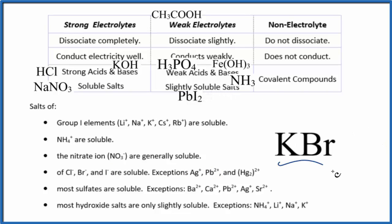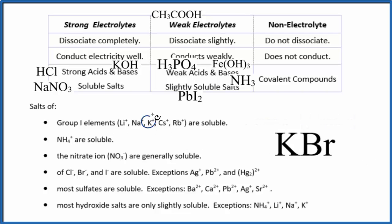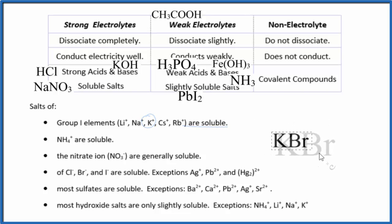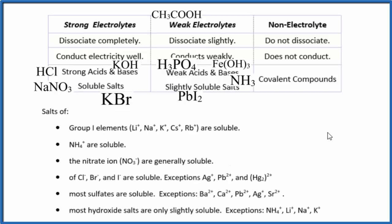What about KBr? We have a metal and a nonmetal, so it's an ionic compound — a salt. Looking at our solubility rules, the first rule shows K⁺ (potassium ion) compounds are soluble. Since it's soluble, it'll dissociate completely into ions — we'll have a lot of ions. That makes KBr a strong electrolyte. So the solubility rules are another tool, just like memorizing strong acids and strong bases, for figuring out whether something will be a strong or weak electrolyte.